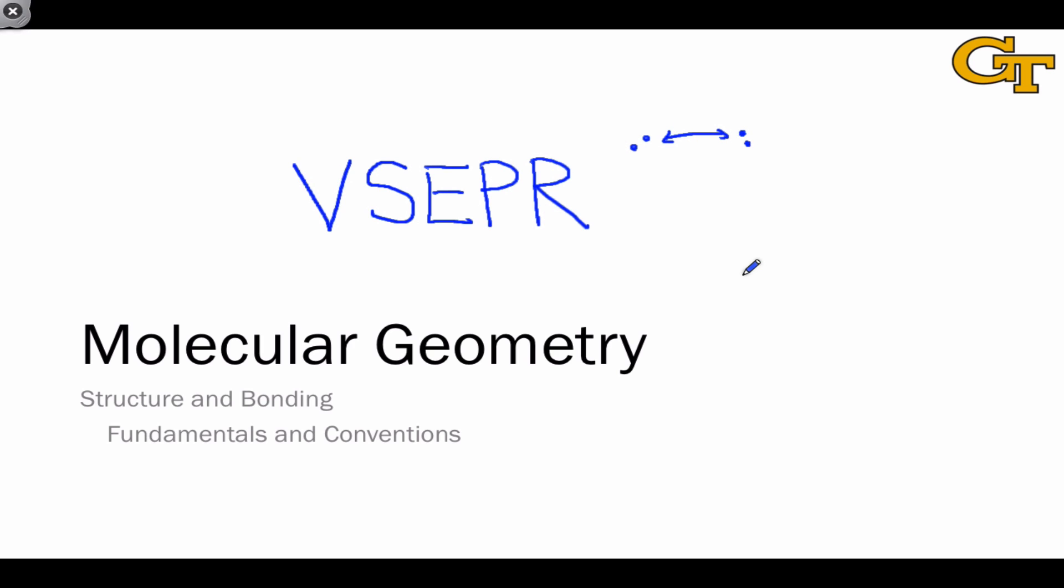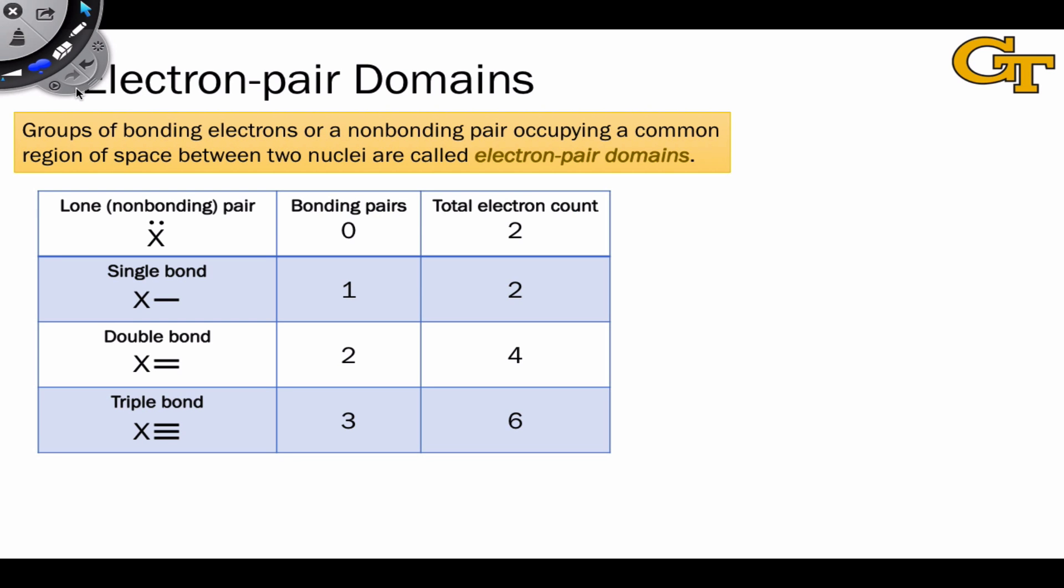An important concept is the idea of an electron pair domain. We define an electron pair domain as a group of bonding electrons or a non-bonding pair occupying a common region of space between two nuclei or located on one nucleus in the case of a non-bonding lone pair.